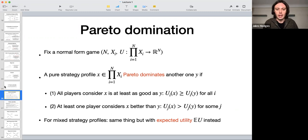So we start off with a relationship between two strategy profiles called Pareto domination. We say that one strategy profile Pareto dominates another one if two conditions hold. One is that every player thinks it's at least as good. So X Pareto dominates Y if every player finds X at least as good as Y and at least one player thinks that X is strictly better than Y.